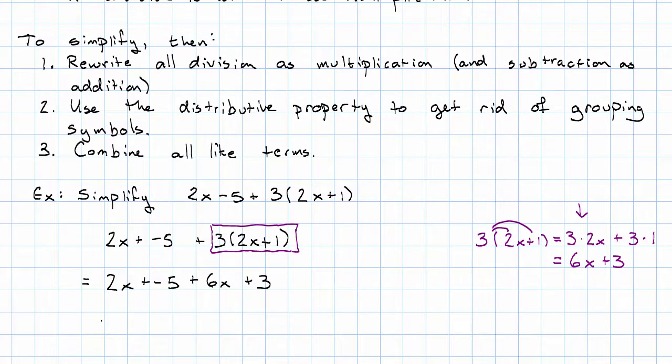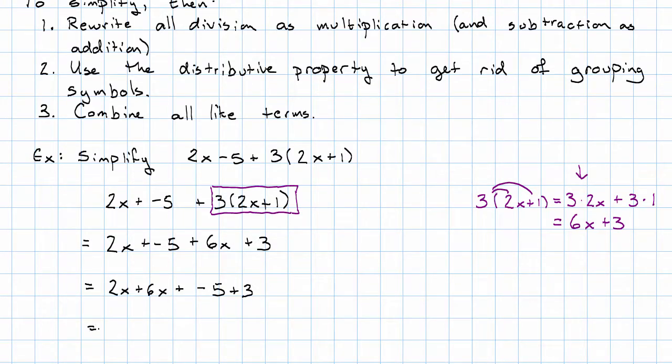Now I'm going to combine my like terms. I'm going to write my x terms next to each other and my constant terms next to each other, then add the coefficients. So, 8x plus negative 2. And if I prefer subtraction, I can rewrite that as 8x minus 2. This is in simplest form. It follows all the rules: no division, no grouping symbols, all like terms combined.